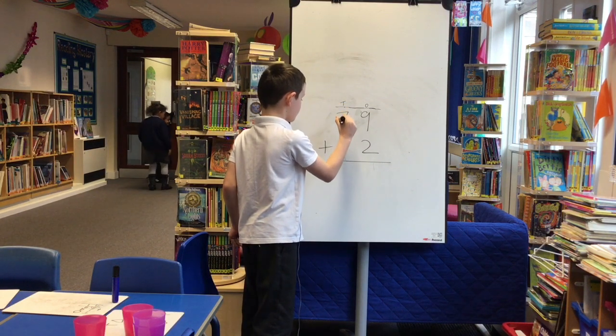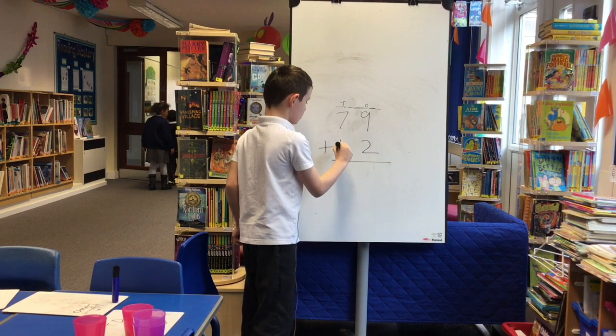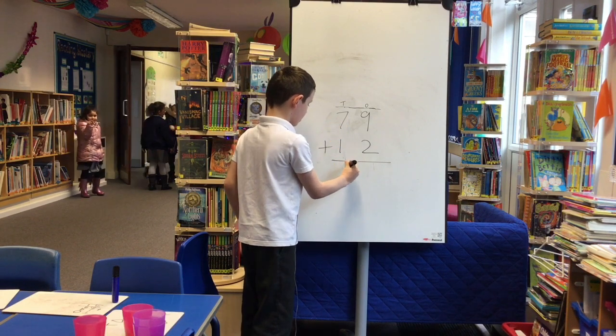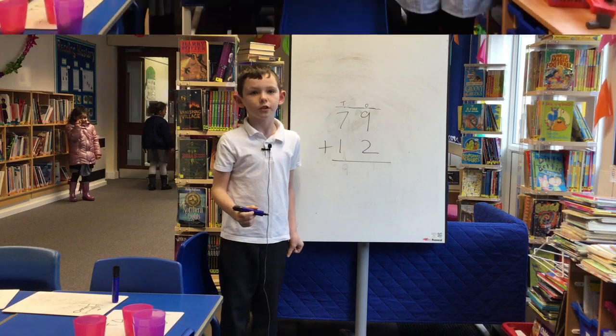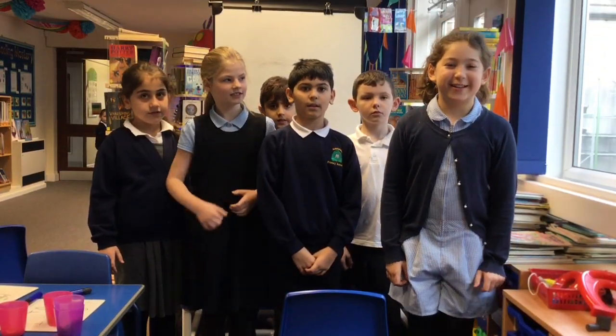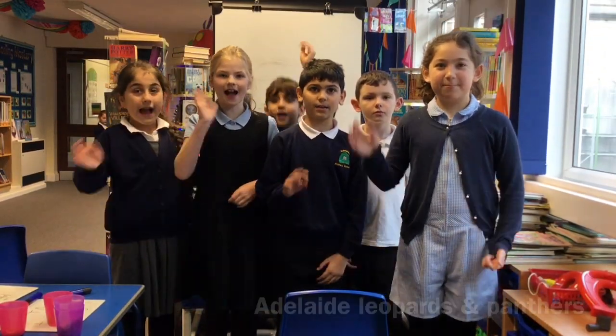And then you add seven tens to two tens and that equals nine tens. So your answer will be ninety-one. That's how we do exchange. Thanks for watching. Bye!